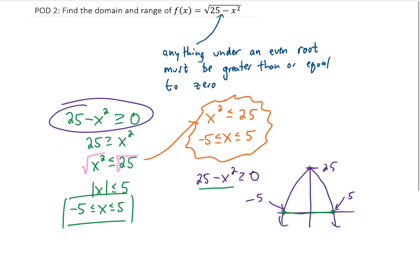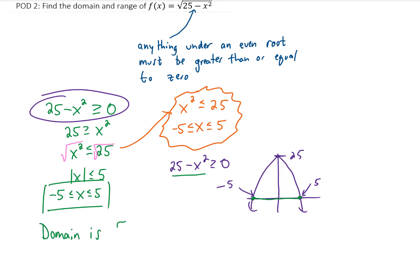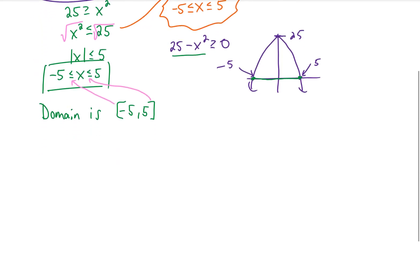Okay, so maybe short story long there, we got a domain which we can write in interval notation as negative 5 to 5 with brackets. We are using brackets because of these little equal signs. If we did not have those little equal signs there, we would be using parentheses. Okay, so that's the domain, what about the range?